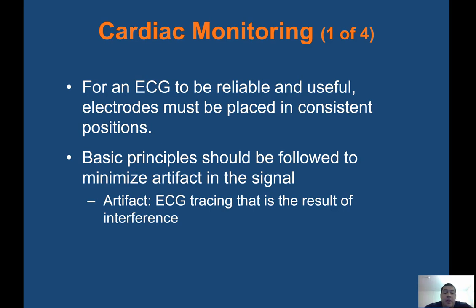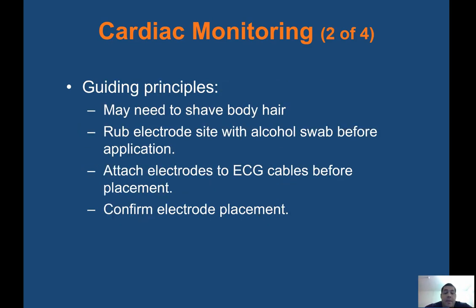Cardiac monitoring: for an EKG to be reliable, electrodes must be placed in consistent positions with minimal artifact. Guiding principles: you may need to shave body hair for electrodes to stick. Rub the electrode site with an alcohol swab before application, attach electrodes to EKG cables before placement, and confirm electrode placement. The electrodes are labeled — RL for right leg, LL for left leg, RA for right arm, and LA for left arm. Make sure right arm is on the right arm and left arm is on the left arm.